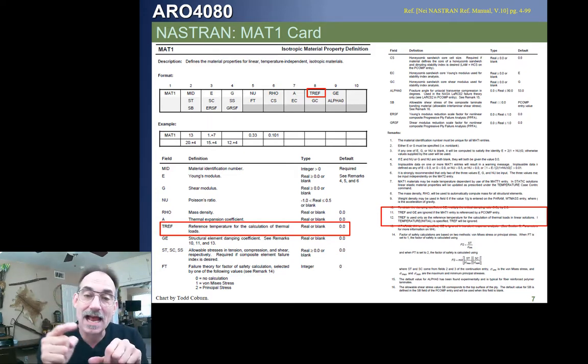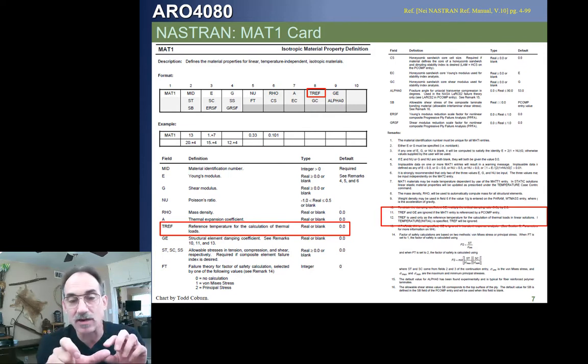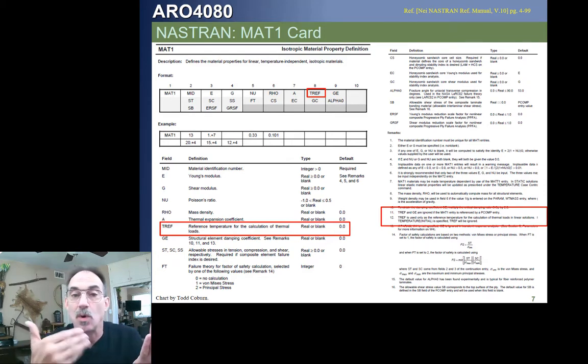So, that's why on the last slide where we had the deck and our temp D card called out 70 degrees, that makes it a temperature rise. Because there was nothing calling out the reference temperature. If you look at that material card, it had a coefficient of thermal expansion, but it had no reference temperature. What that means is the reference temperature defaults to zero, and that makes that temperature D, a temperature rise.